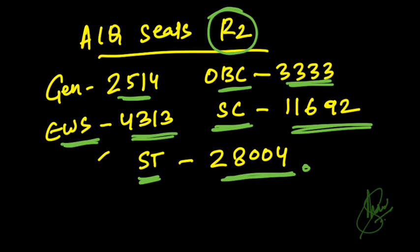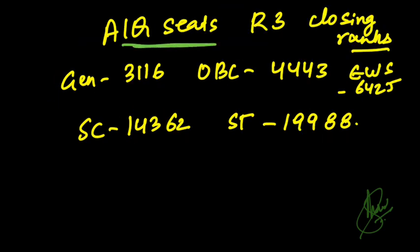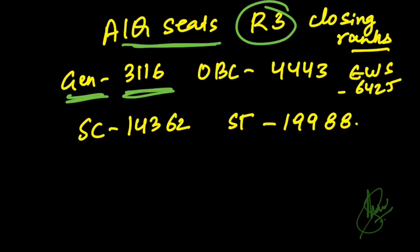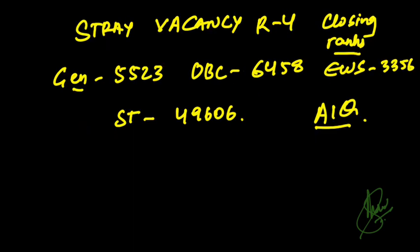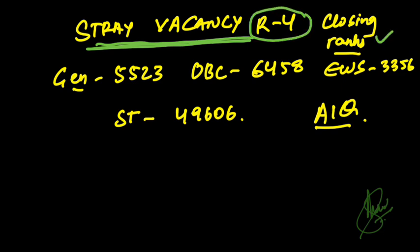These are closing ranks for round 2 for MD Radio Diagnosis in All India Quota seats. For round 3, the closing ranks are: General category — 3116, OBC — 4443, EWS — 6425, SC category — 14362, and ST category — 19988.